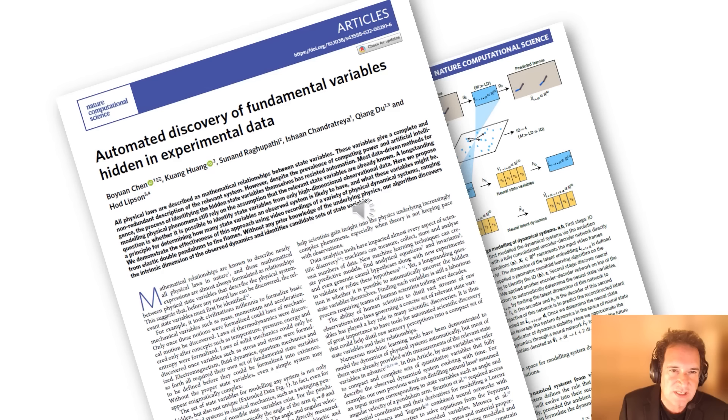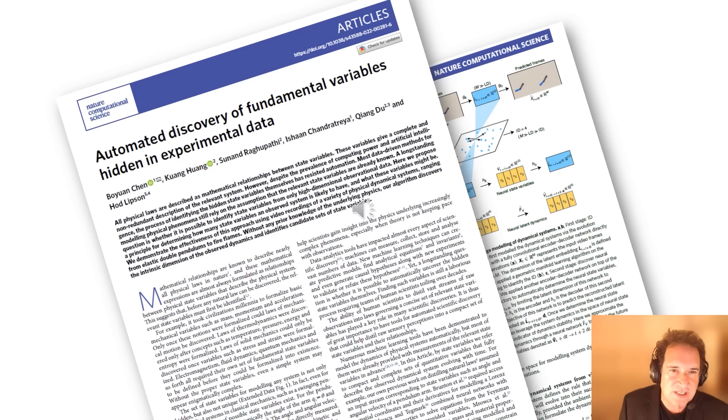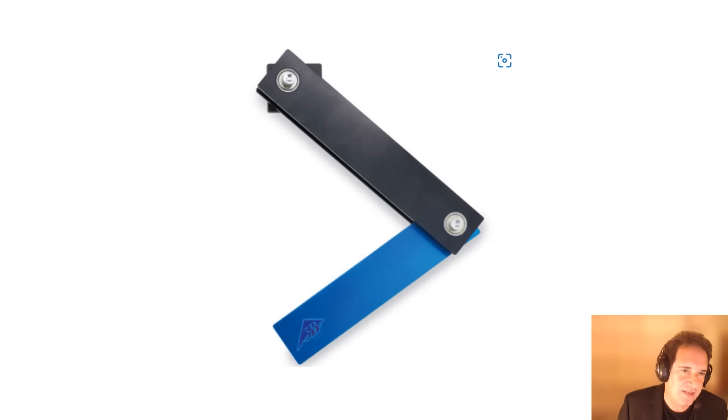That's what scientists do. They observe phenomena, rub their chin and scratch their heads, and come up with the variables. Once we have those variables, we can start using these wonderful AI tools. What we did in this paper is look at that very difficult first stage, looking at some physical process using a camera and trying to extract the variables that describe that phenomenon.